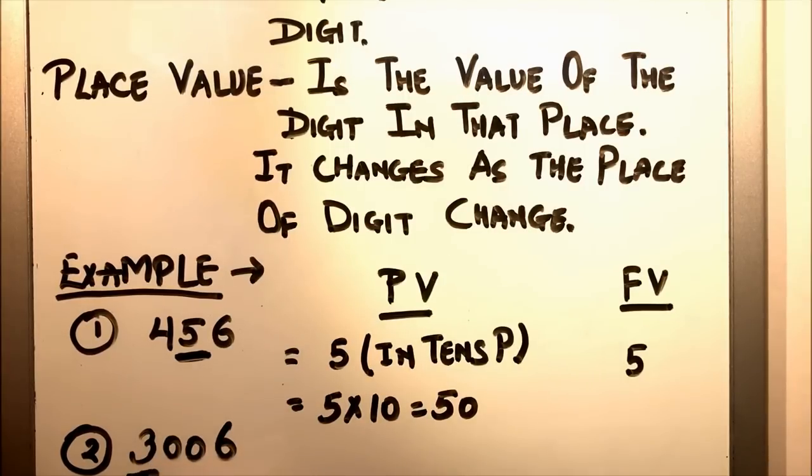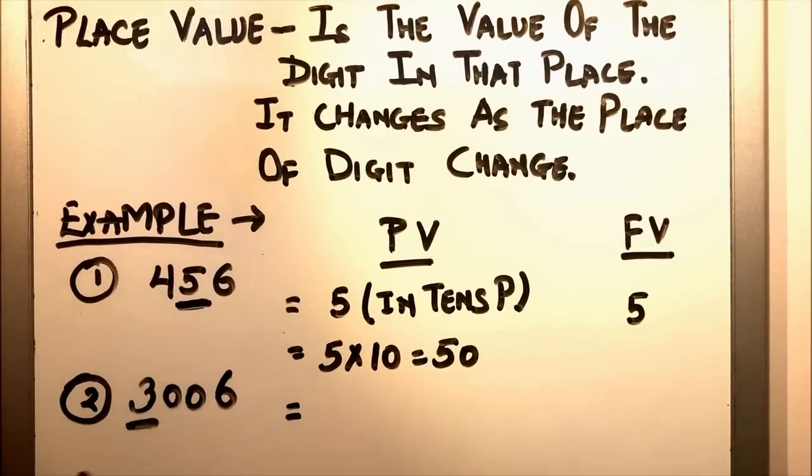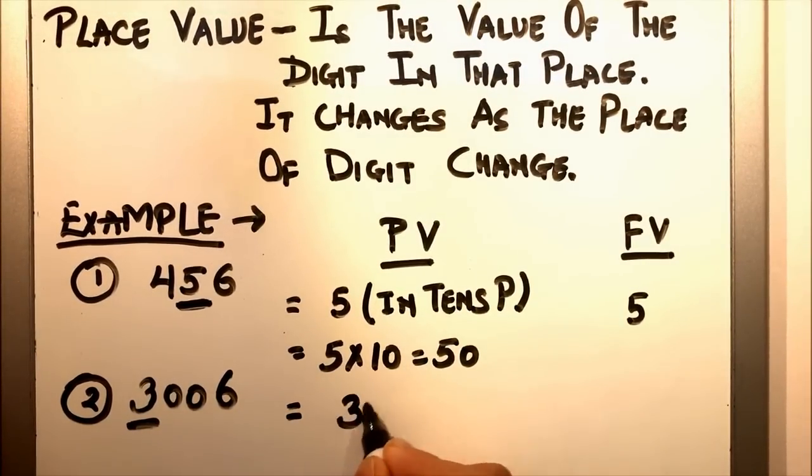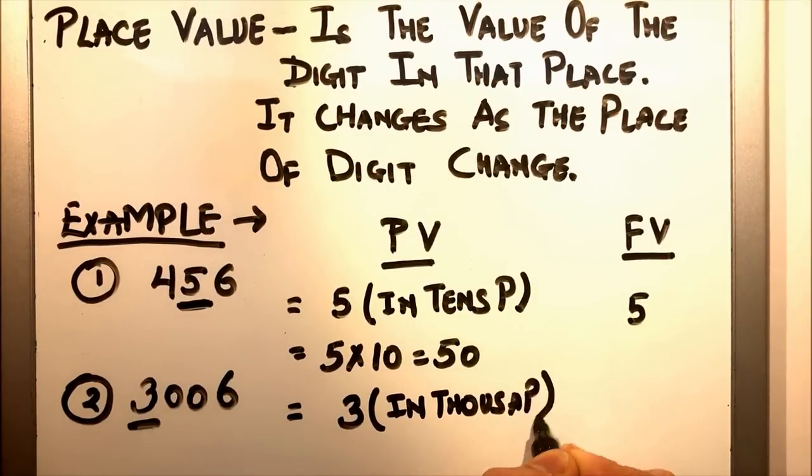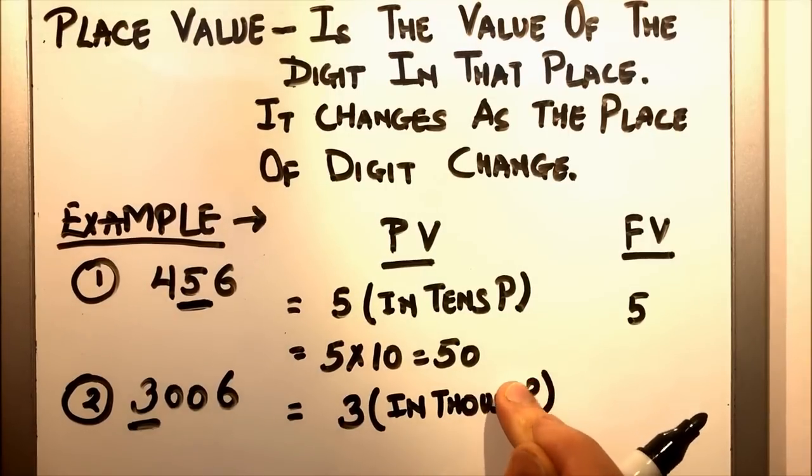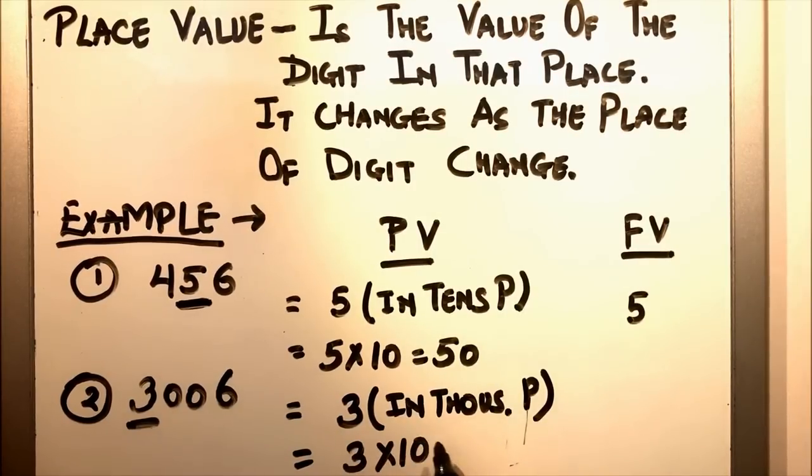Here we see that 3 is in the thousands place, so the place value of 3 will be 3 times 1000, which is equal to 3000.